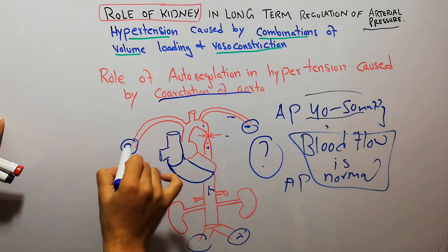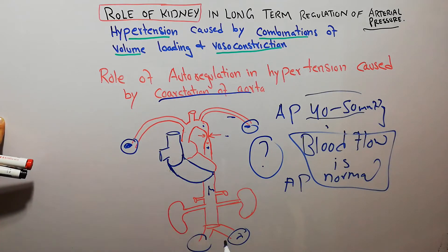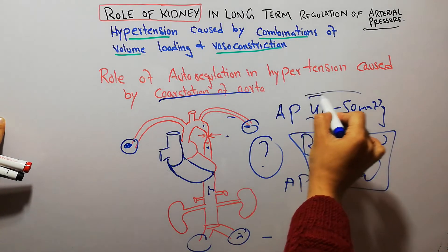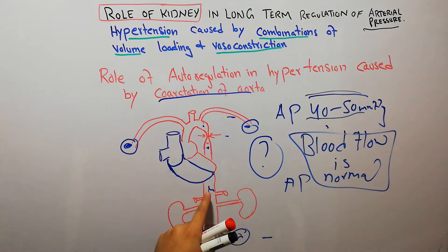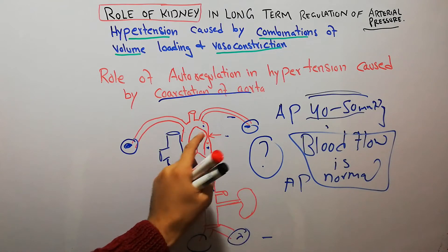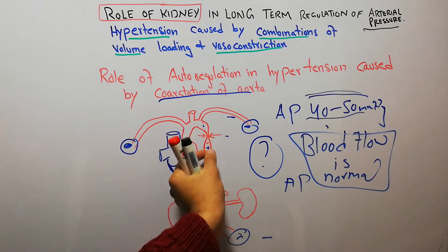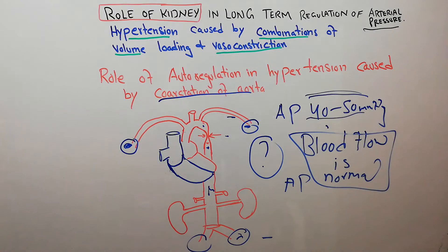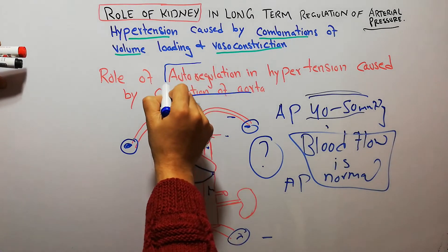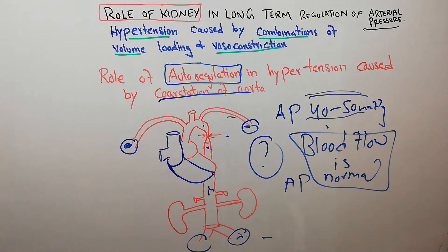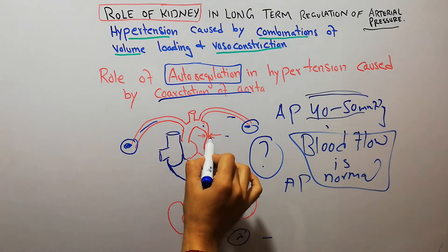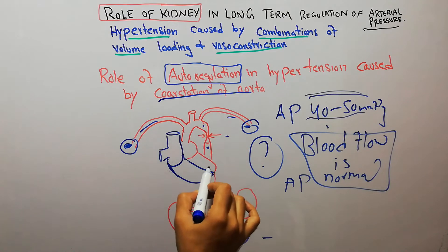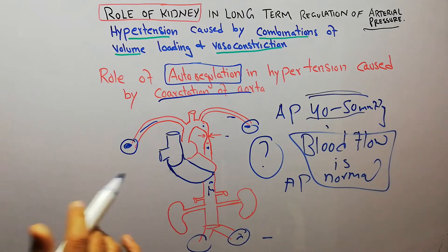Why is the blood flow not greater in the upper extremities, given that the arterial pressure is 40-50 mmHg higher than in the blood vessels distal to the point of constriction? The answer is basically autoregulation. The amount of renin, angiotensin, and aldosterone in the vessels proximal to the constriction and those distal to the constriction is the same.